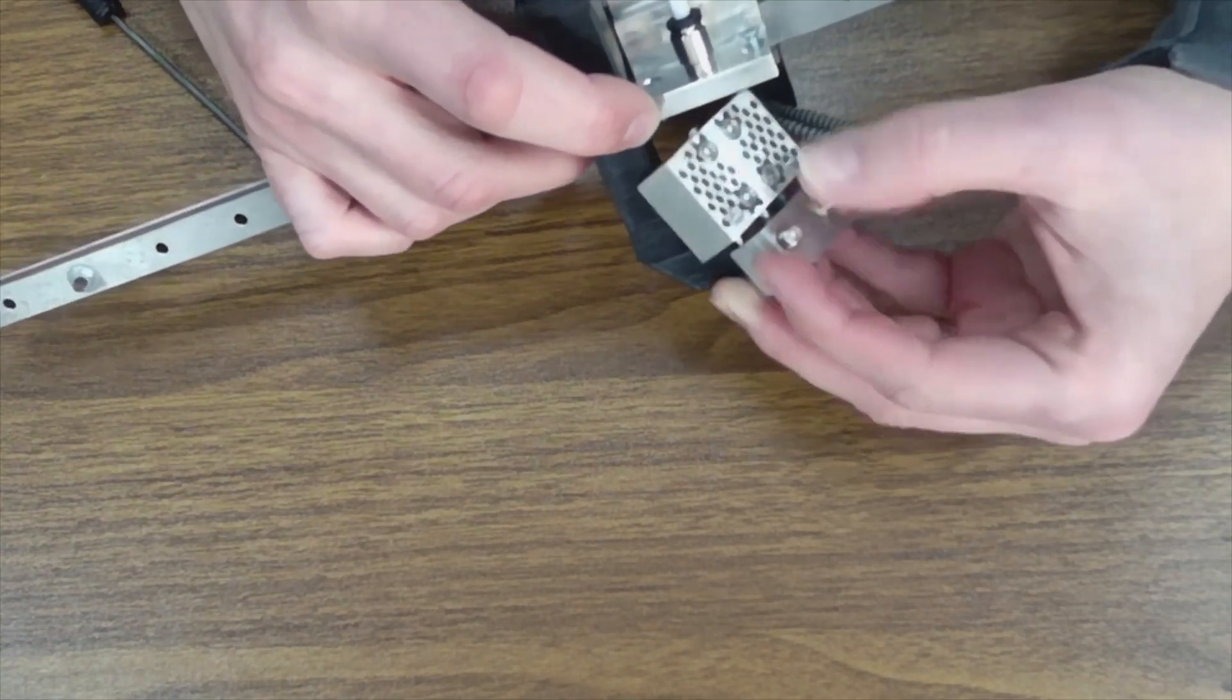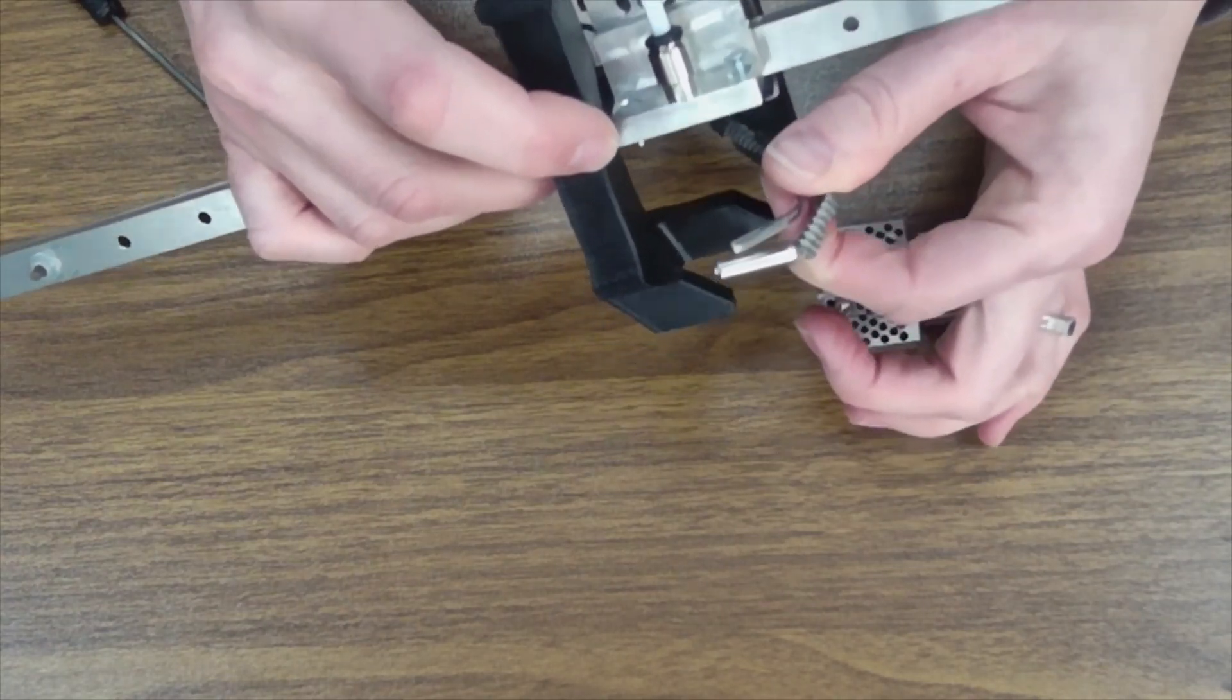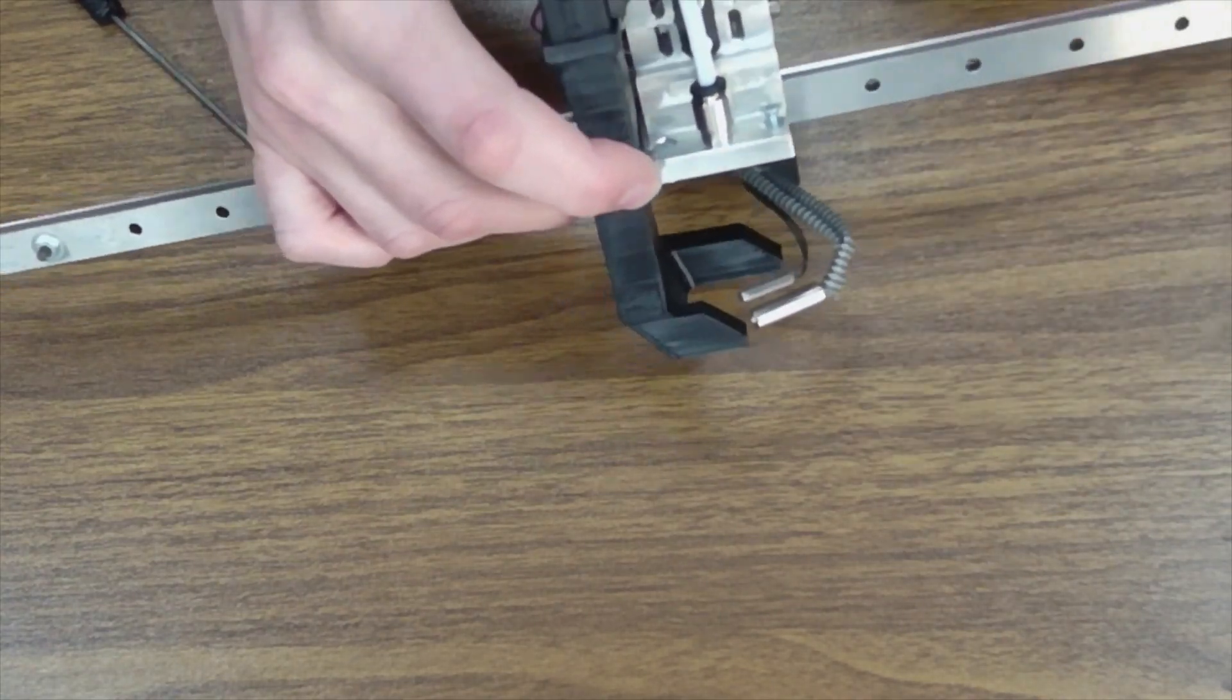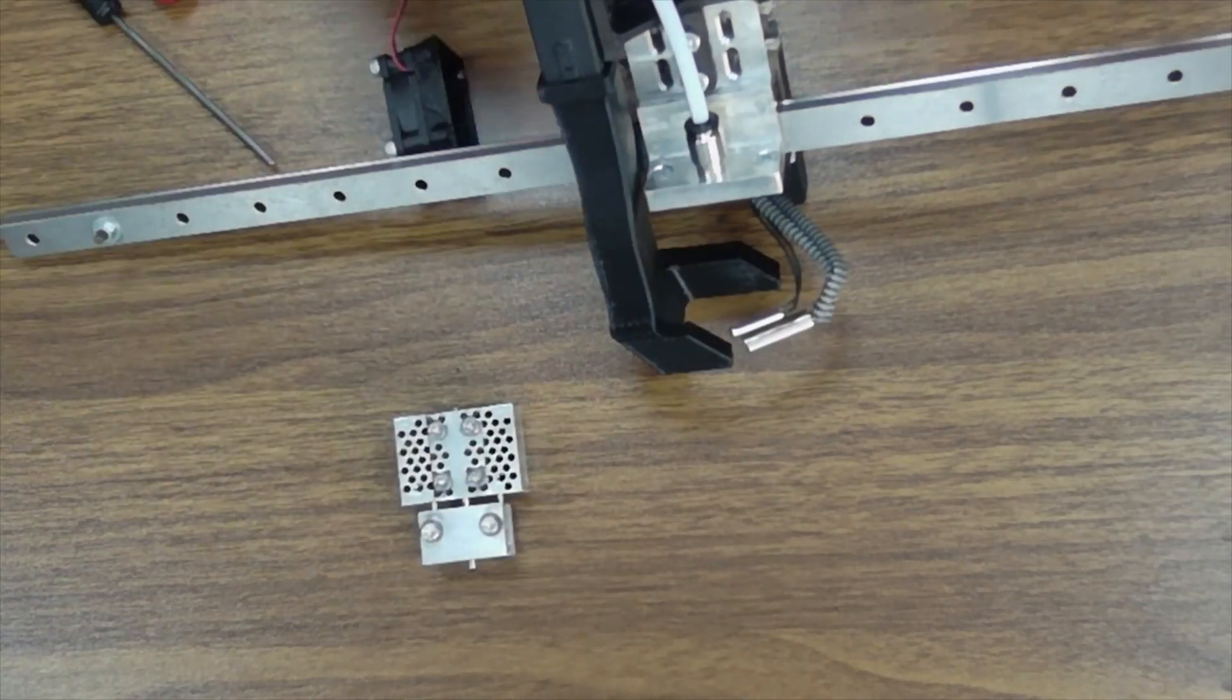Here's why we loosen the hot section. The easiest way to get the printhead off is to leave your heater and your sensor electrically connected to the printer itself. So I have my printhead hardware detached. These stay connected. That's the easiest way to do it.